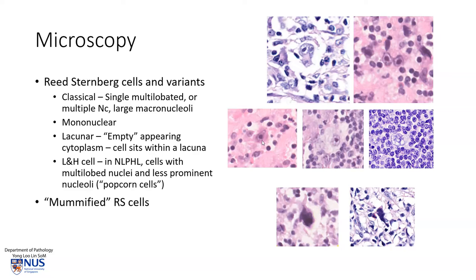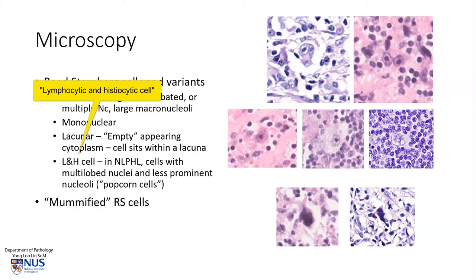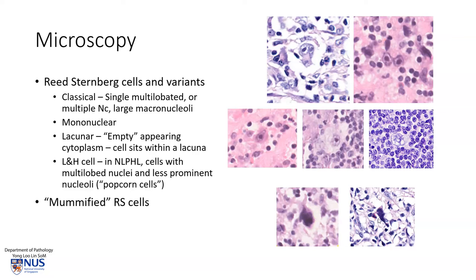We also have a mononuclear variant where there is only one nucleus with a prominent macronucleolus, and a lacuna cell variant where the cell with the large nucleus and nucleolus is actually sitting almost in an empty space. We have the non-classical Hodgkin lymphoma or nodular lymphocyte predominance Hodgkin lymphoma showing the L and H cell, which stands for lymphocytic and histiocytic cell. These cells are sometimes called popcorn cells because they don't have such prominent nucleoli, but their nuclei may be multi-lobed. It is also quite common to see these very degenerate, mummified cells, or mummified Reed-Sternberg cells, which look somewhat shrunken with a smudgy dark nucleus.